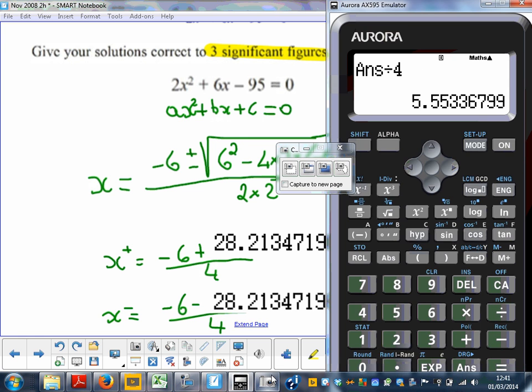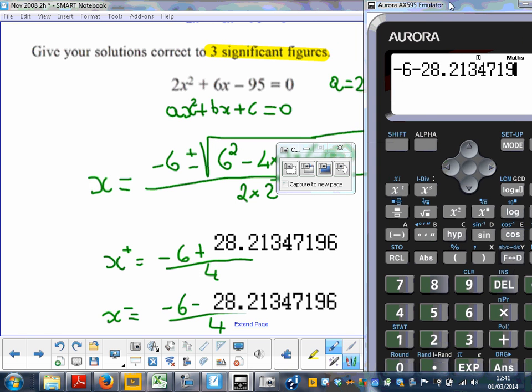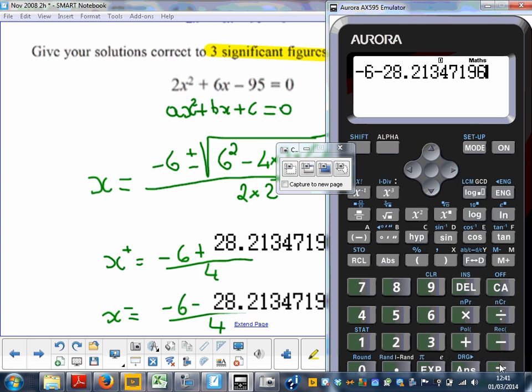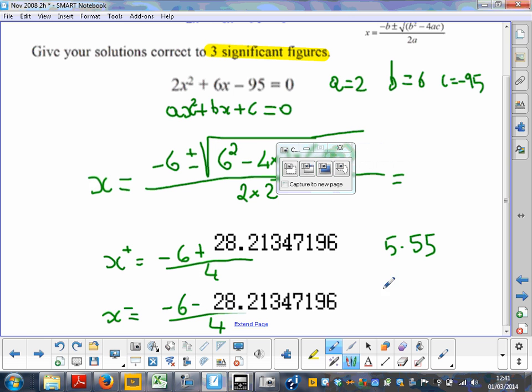Then the second bit, let's take a look. It would be -6 minus 28.21347196, equal, and then divided by 4. To three significant figures, -8.55.